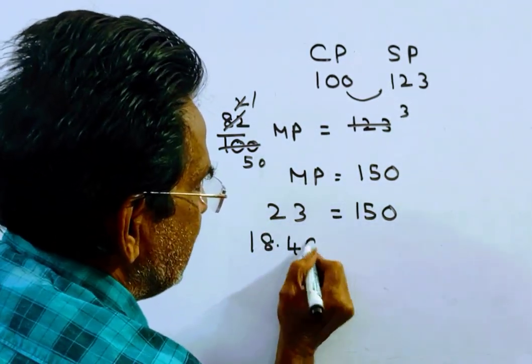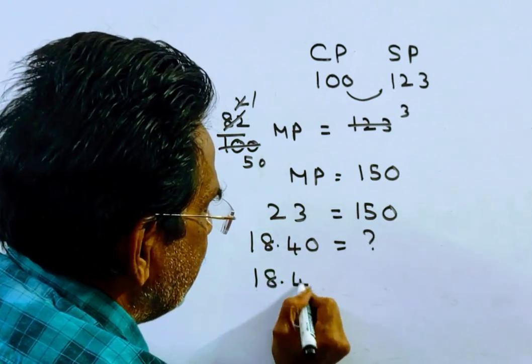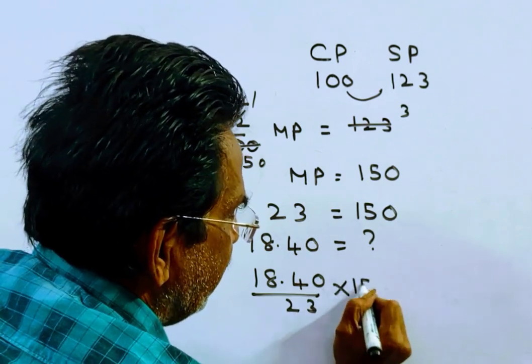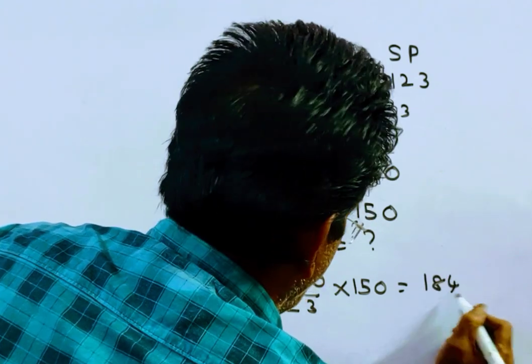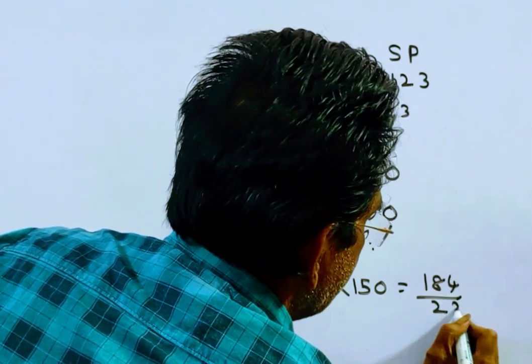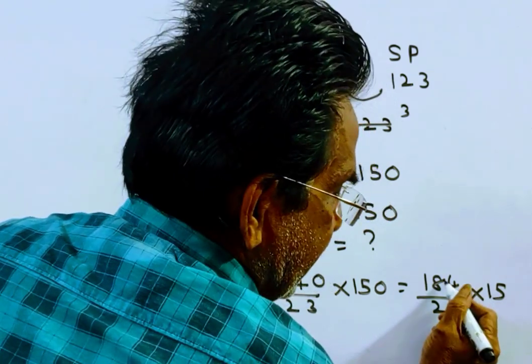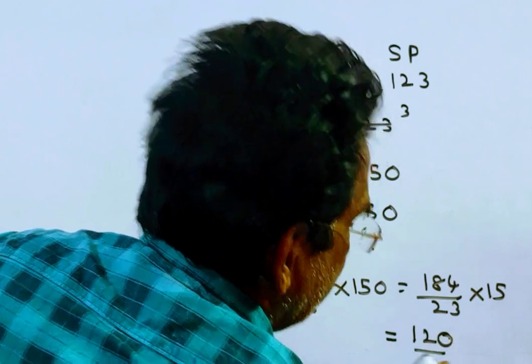1845 paise divided by 23 times 150. This is equal to 1845 by 23 times 15, which gives us 120 as the marked price.